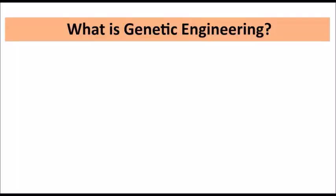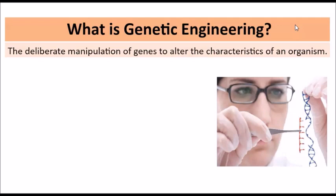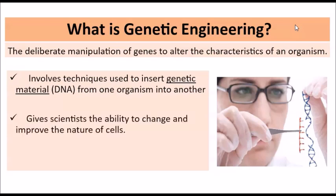So what exactly is genetic engineering? Simply put, it is the deliberate manipulation of genes to alter the characteristics of an organism. Basically, scientists tamper with the genetic material of cells. Genetic engineering involves techniques used to insert the genetic material — which is in most cases the DNA, deoxyribonucleic acid — taken from one organism and inserted into the DNA of another. This gives scientists the ability to change and improve the nature of cells and change up the characteristics of cells because they are manipulating the DNA material.